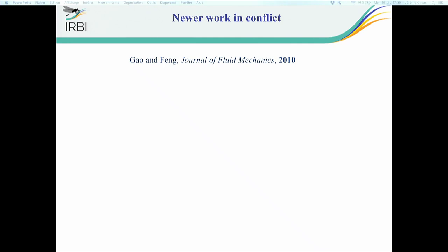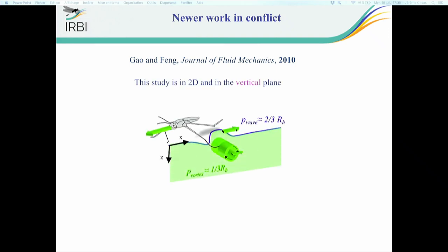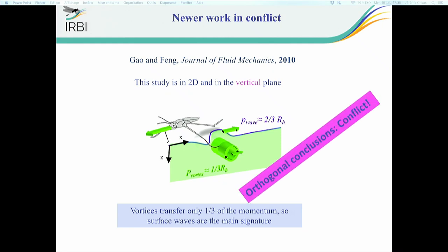However, Gao and Feng in a big computational paper came to a rather different conclusion. They were looking at a vertical plane and looking at the energy transfer, and came to the conclusion that two-thirds were in the wave, surface wave, and only one-third was in the vortices. So surface wave would in that case be the main signature of momentum transfer in the fluid. We have orthogonal conclusions almost and therefore a conflict.